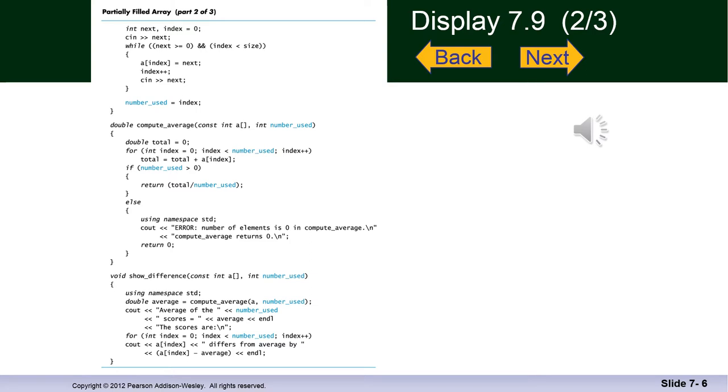And also, number_used, because it was passed by reference, can be used in the function show_difference as its second parameter. Take a close look at this. It's interesting programming and something you should be aware of.